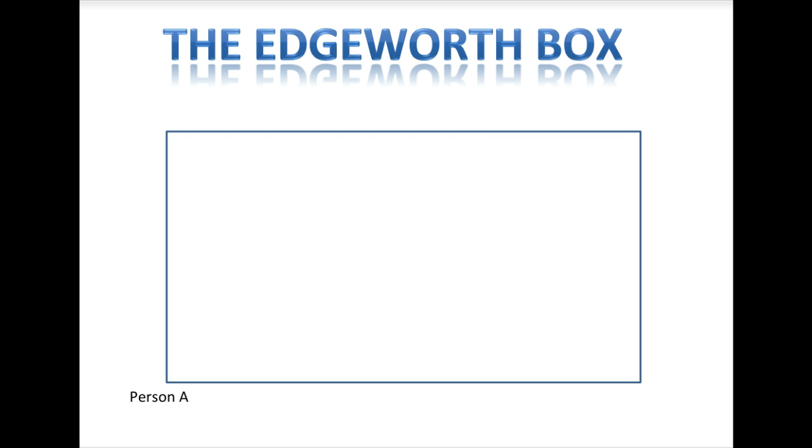The tool that we will use to analyze the interaction of these two people is called the Edgeworth-Box. As the name implies, it's a box. We can use this box to represent the preferences of the two people in these two markets. Person A is at the bottom left-hand corner of the box. Person B will be at the top right-hand corner of the box.